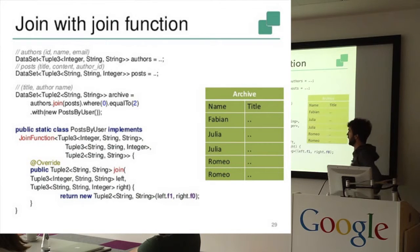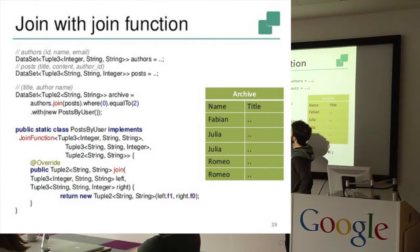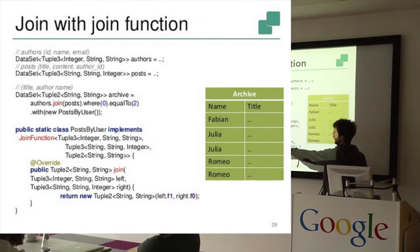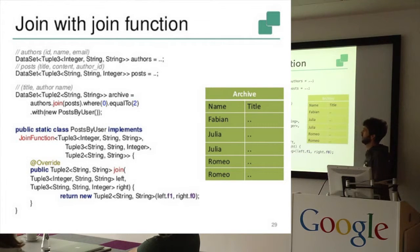So here you would return, you would specify the join function here with posts by user, and here in the join function you would then emit just only the name and the title from the two data sets. Yes?